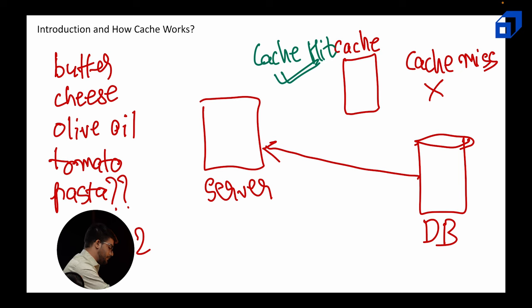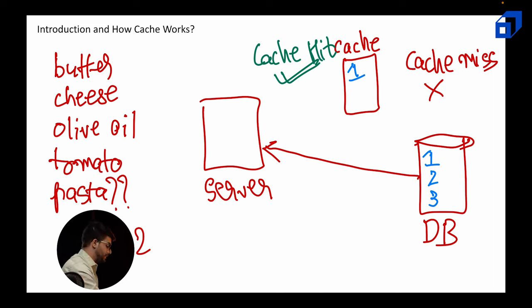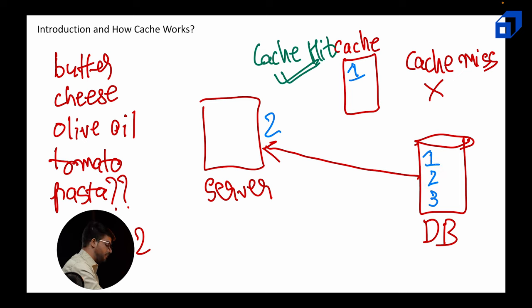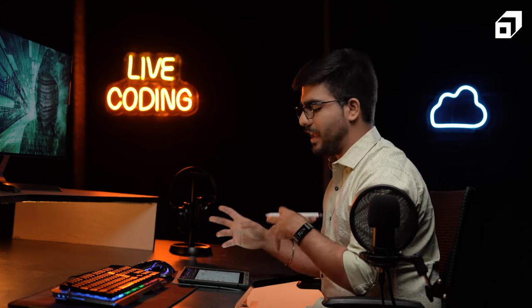For example, in the cache there is some information already — say '1' is present — and in the database '1', '2', and '3' are present. If the server asks for '1', it will ask the cache first, and since '1' is already there, it will return '1' from the cache — that's a cache hit. Now if it asks for '2', the cache will say it only has '1', so we retrieve '2' from the database and return it to the user. Meanwhile, we also store the missing '2' in the cache so that future requests for '2' can be served from cache.